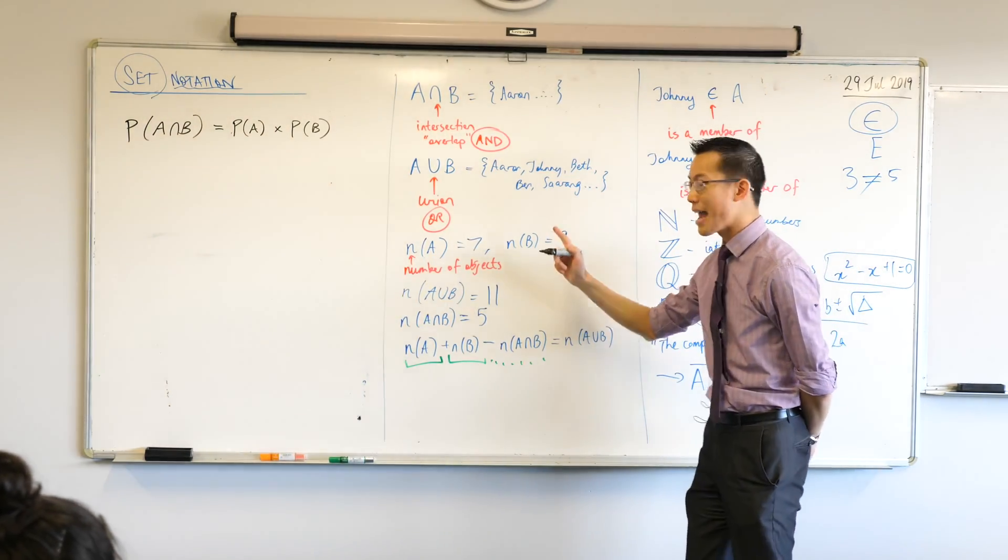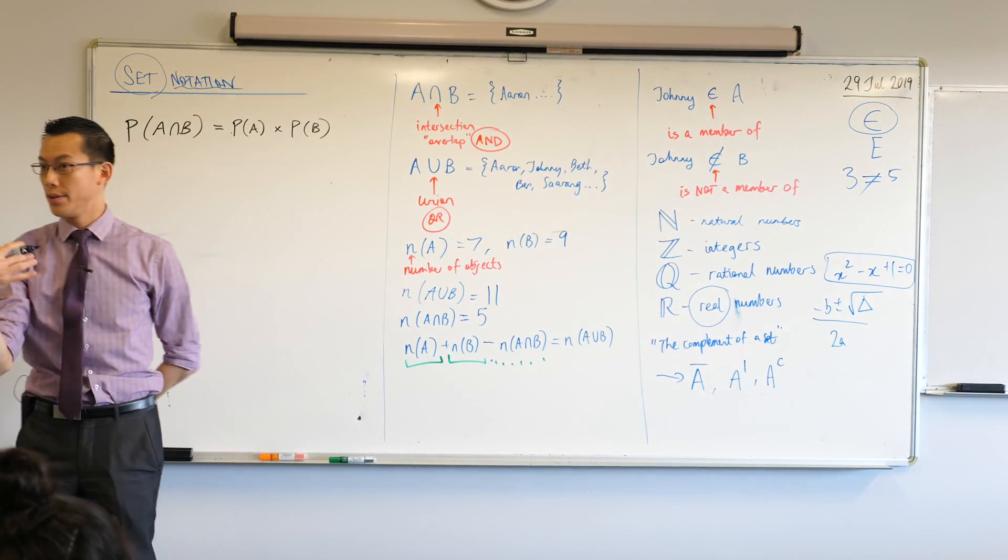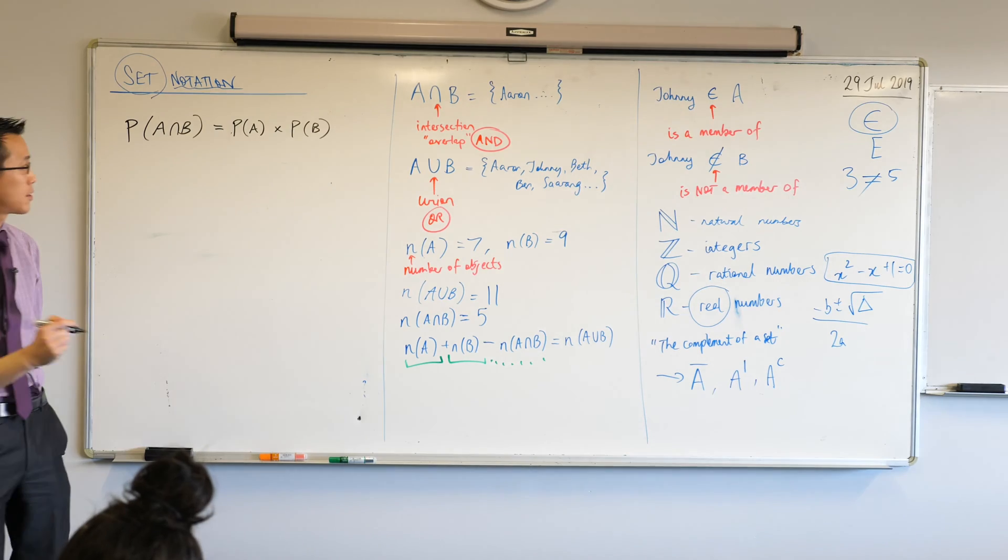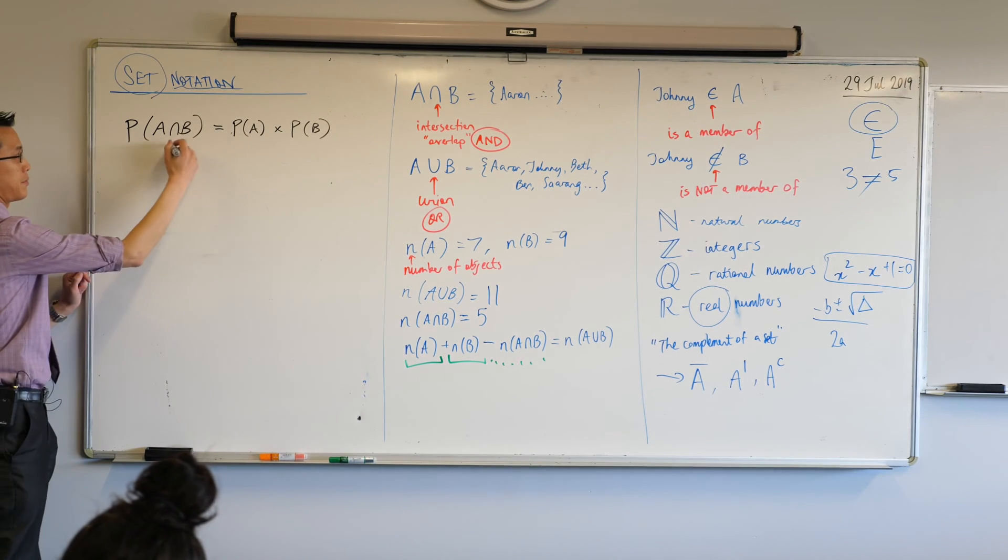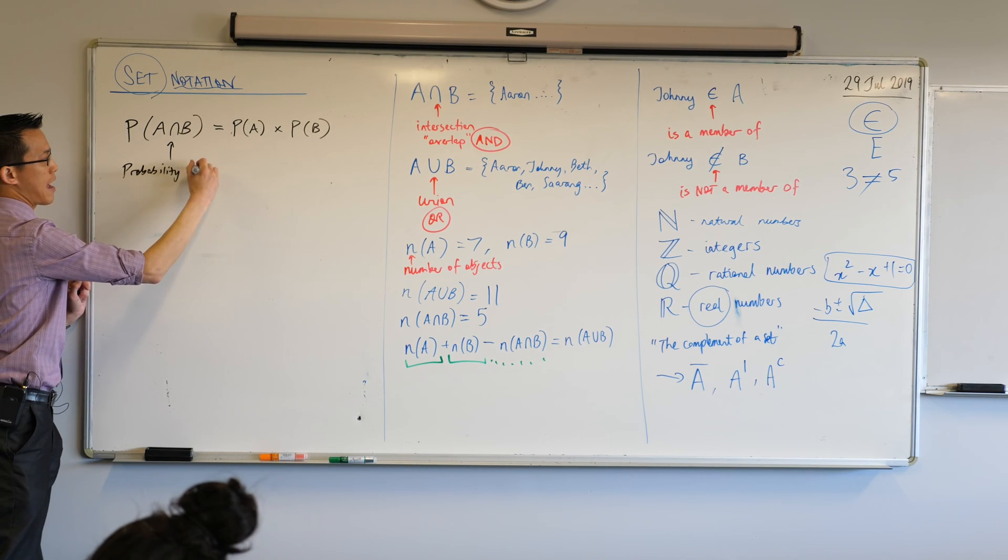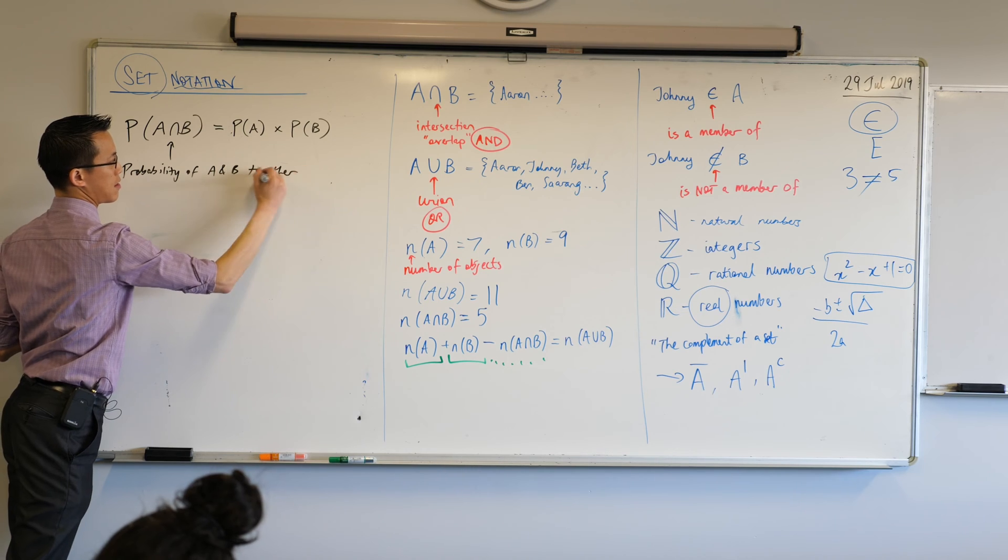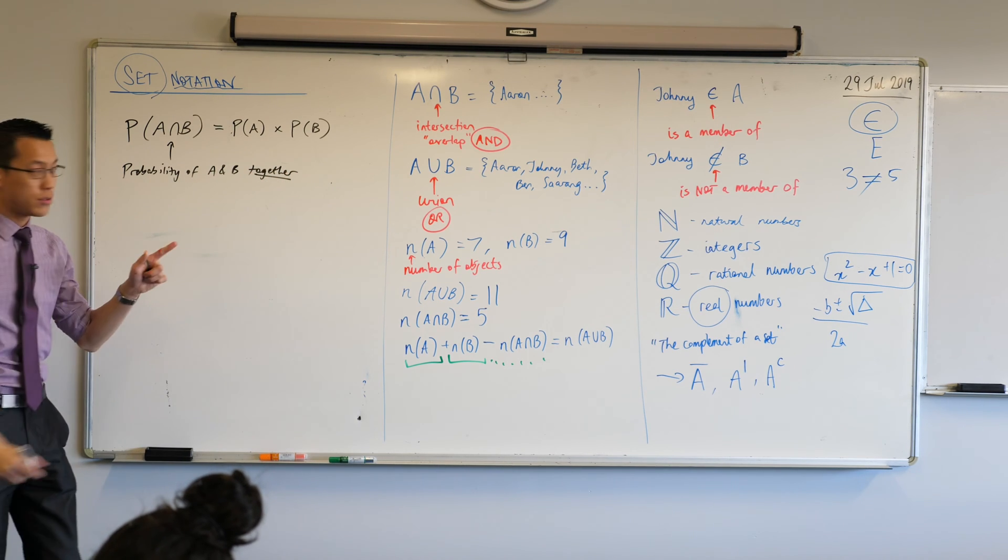Sometimes we add probabilities. But not when you want both of these events to happen simultaneously, at the same time. So if you want the probability of A and B together, what do you do?